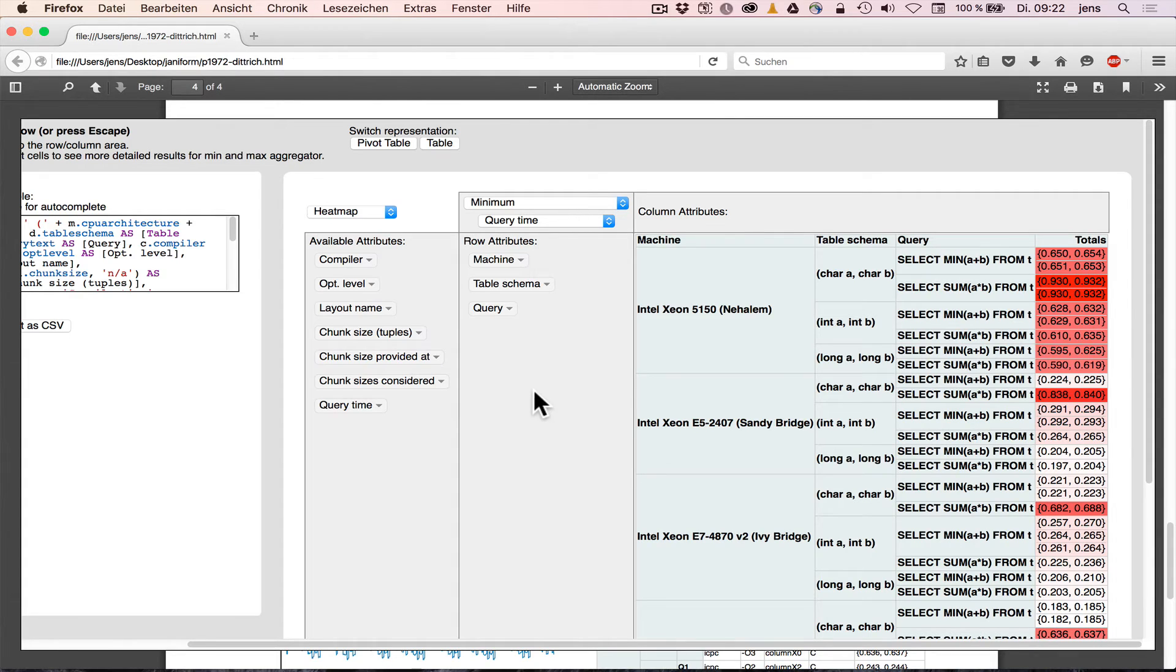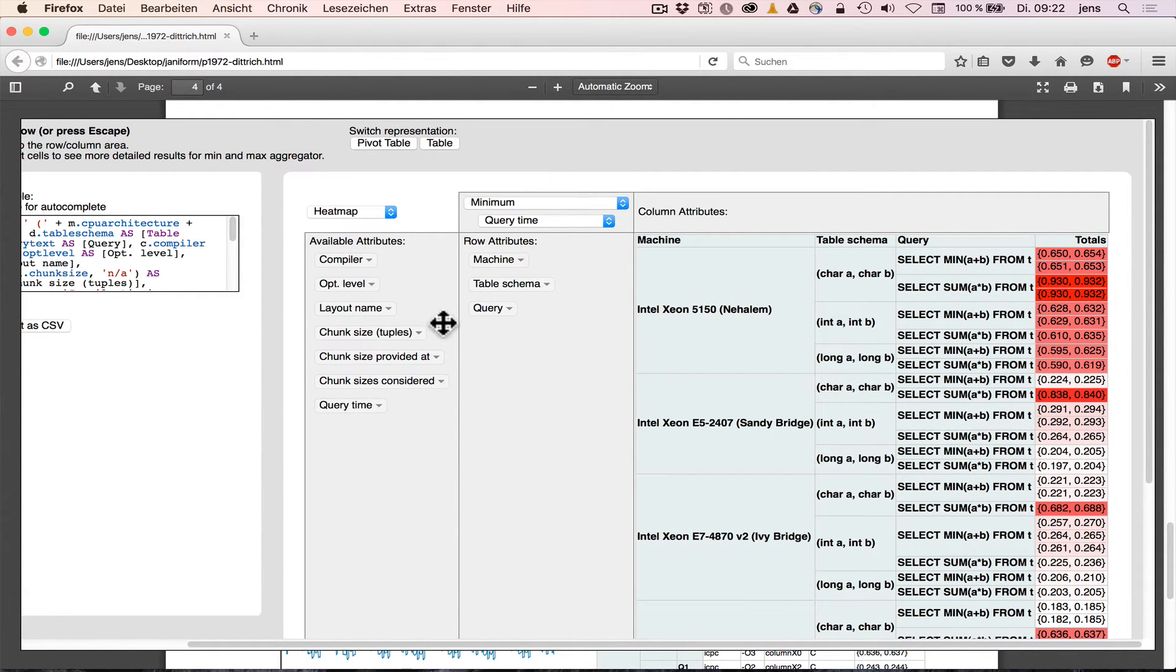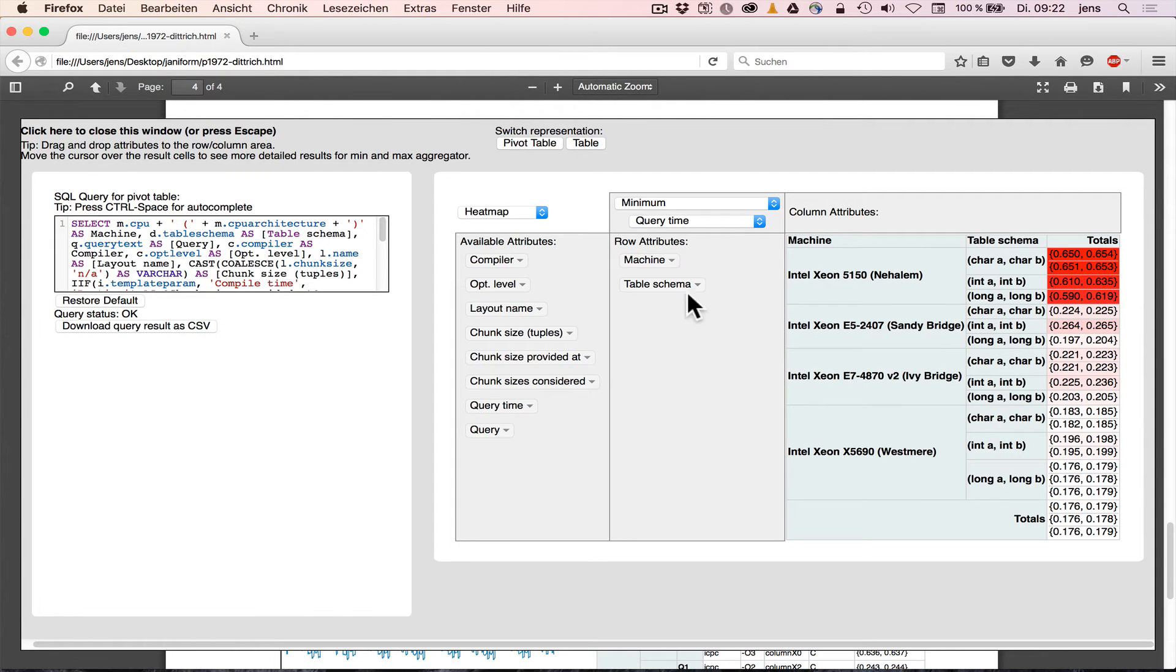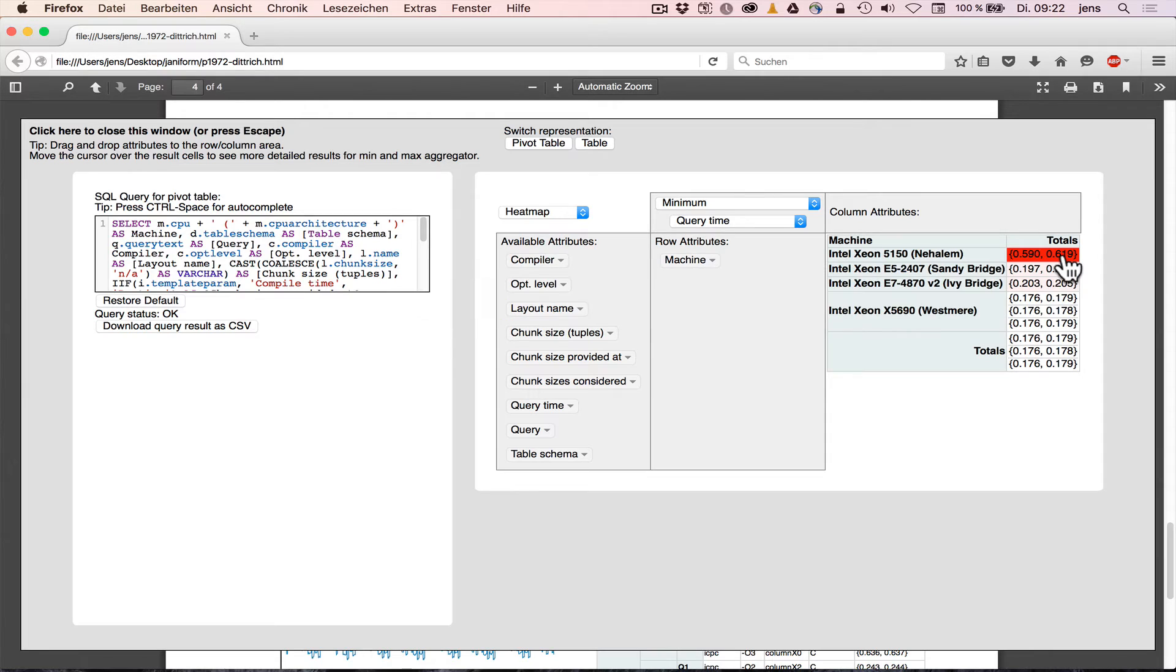So what we're seeing here is the data and some visualization of the data so we can play with the data. This is a typical drill down you would use in a database system. So we first group by machine. Within the same machine, we group by table schema. Within the same table schema, we group by query. So I could play with the data. Whenever I play with the data, the result is recomputed. Here we have some confidence interval being computed.